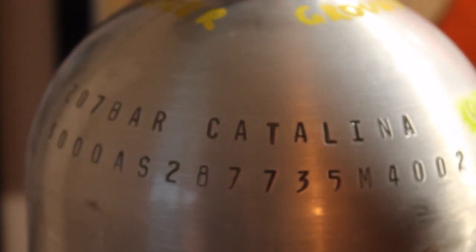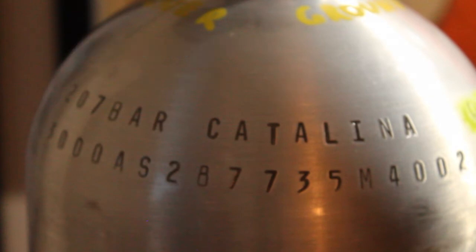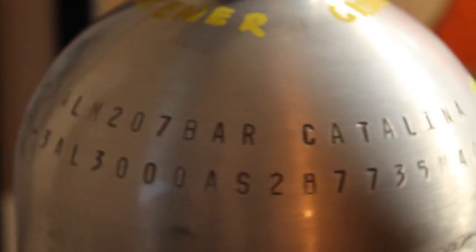Next, beside that, we have a bunch of letters together that spell Catalina. Now, this is the manufacturer of the tank. This is the brand that makes tanks, all sorts of shapes and sizes, Catalina. Your particular tank may have a different name. It may say Luxfer on it, it may say Faber on it, or it may have a couple of different names on it.